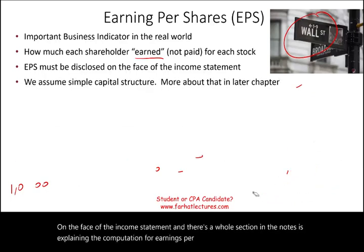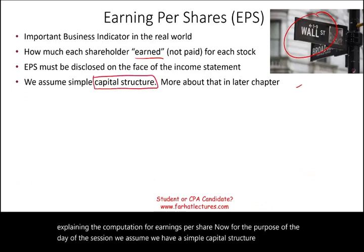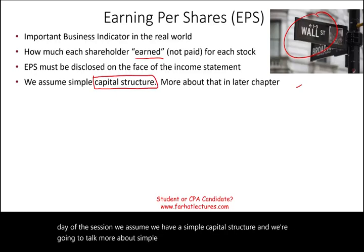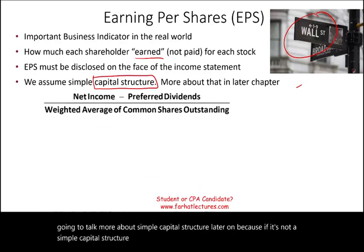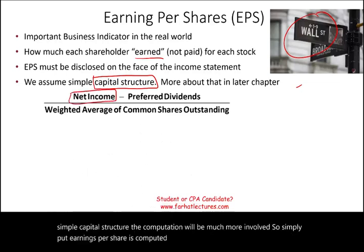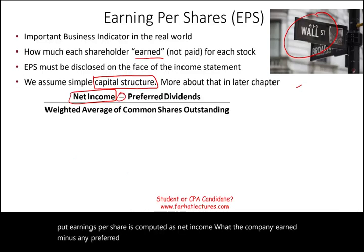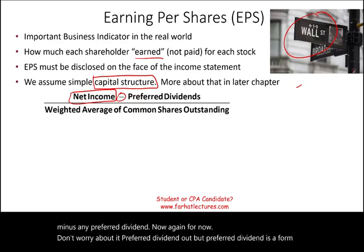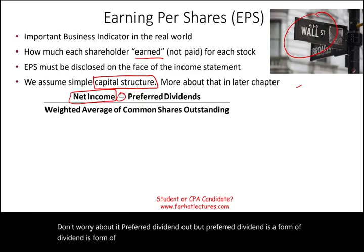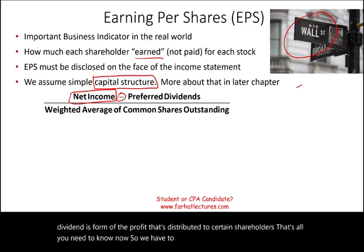For the purpose of this session, we assume a simple capital structure — we'll talk more about that later. If it's not a simple capital structure, the computation is much more involved. Simply put, earnings per share is computed as net income minus any preferred dividends. Preferred dividends are a form of profit distributed to certain shareholders, so we deduct that amount first.